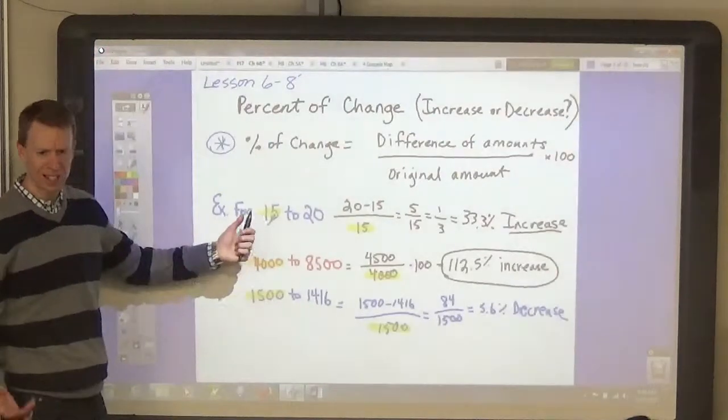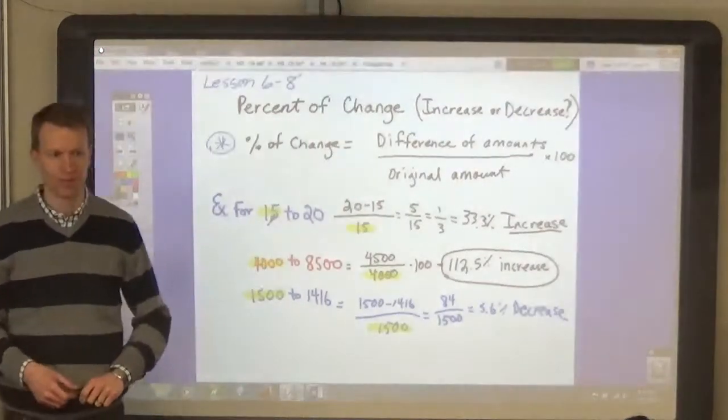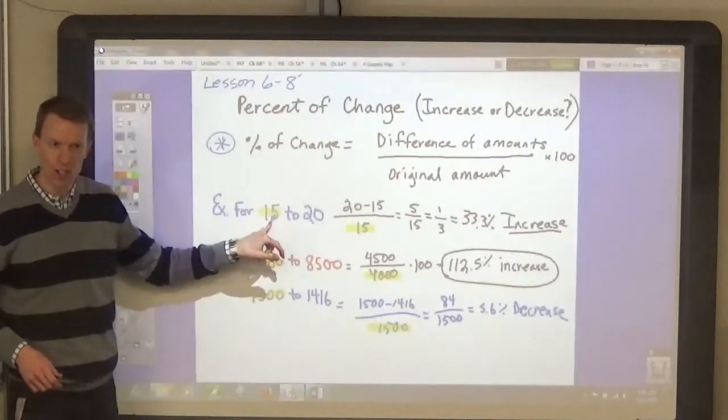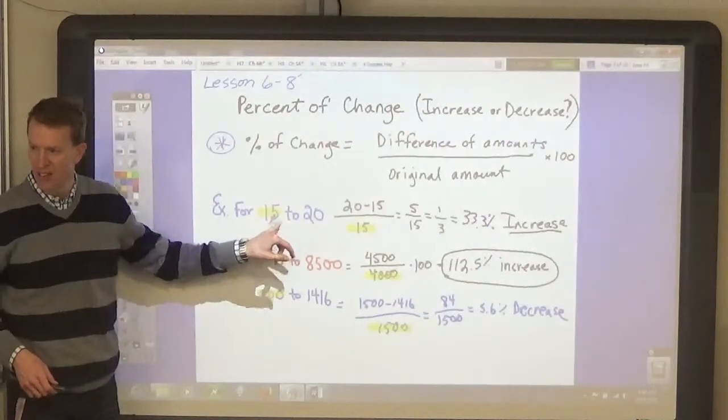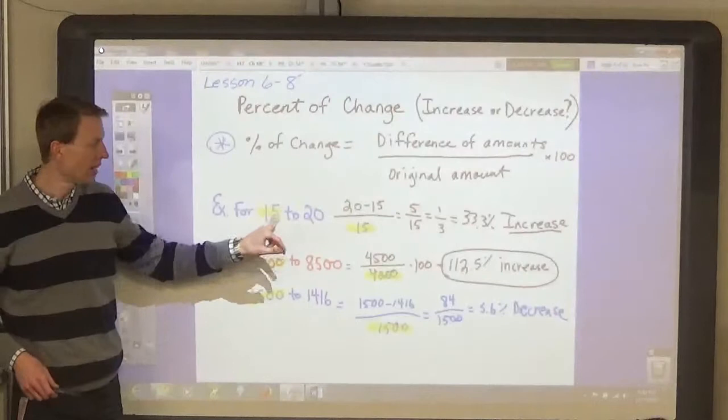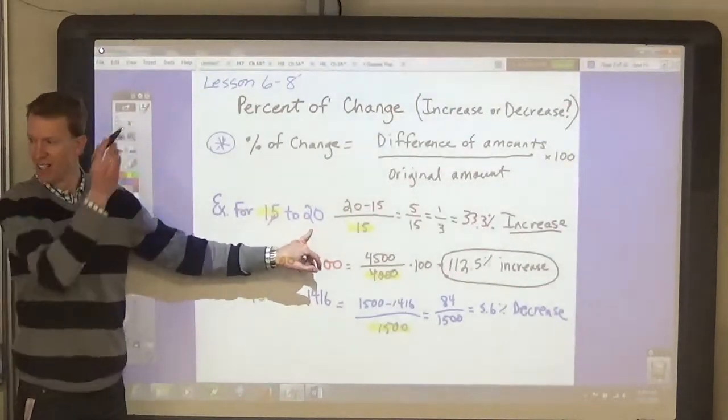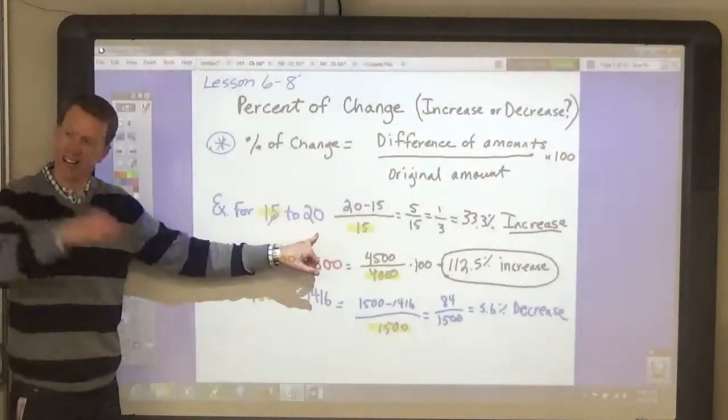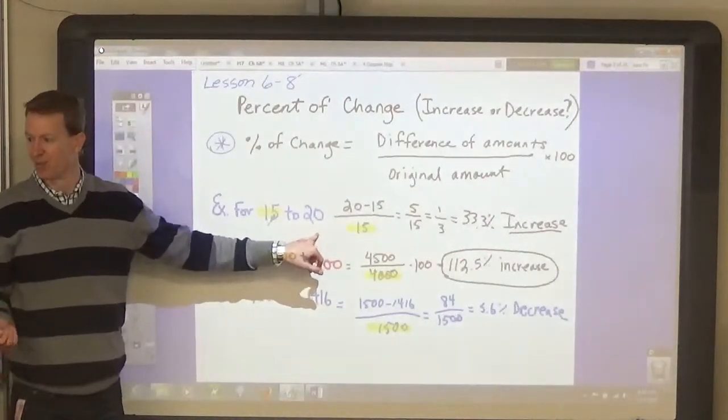How do you know if it's an increase or decrease? You look at the original, and then the second number. If the second number is bigger, it's an increase. And if the second number is smaller, it's a decrease. Simple, right?